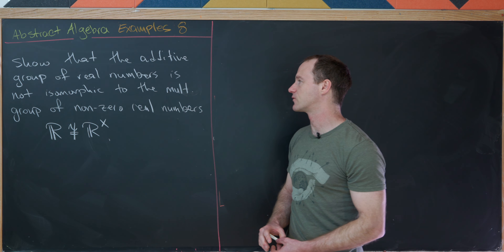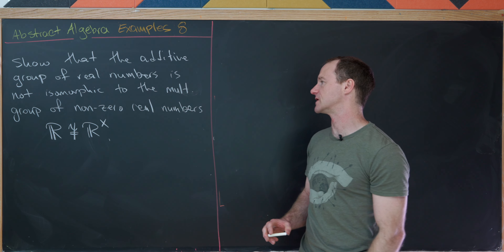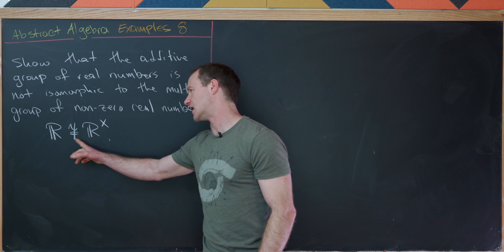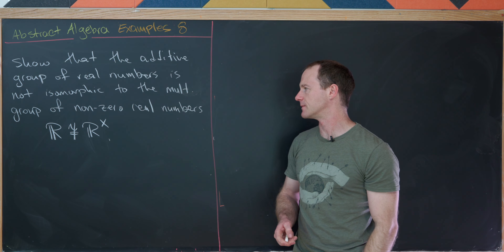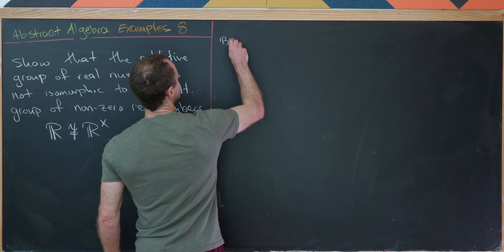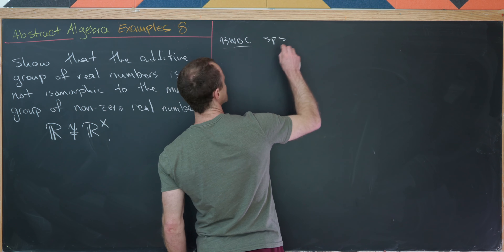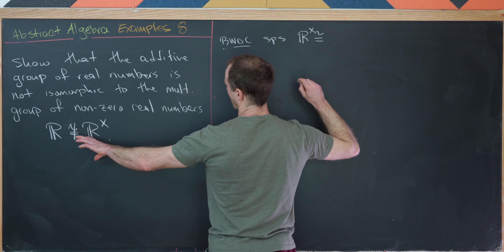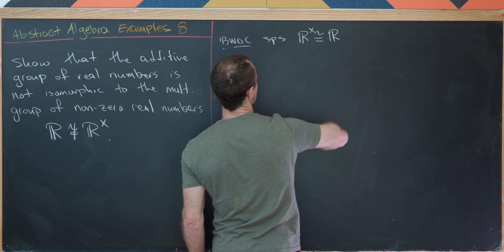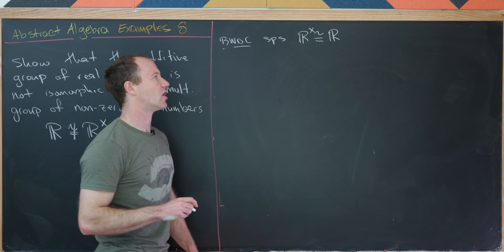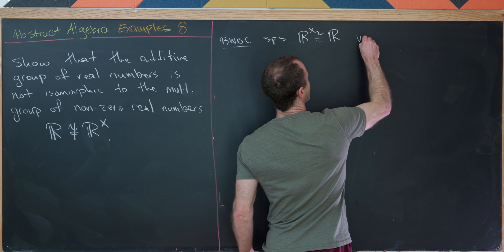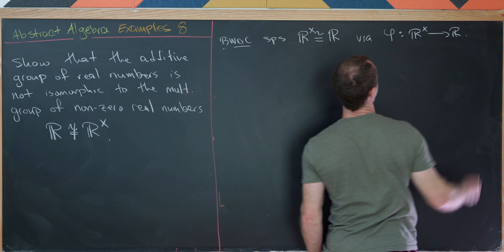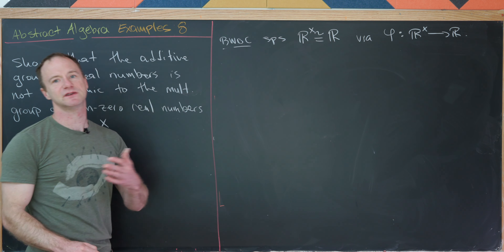For our next example, we'll show that the additive group of real numbers is not isomorphic to the multiplicative group of non-zero real numbers — in other words, ℝ is not isomorphic to ℝ×. We'll do this by way of contradiction. Suppose we have an isomorphism φ from ℝ× to ℝ. Since this is an isomorphism, it's bijective.